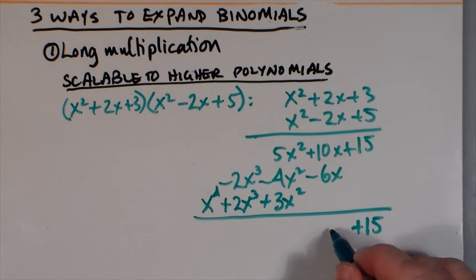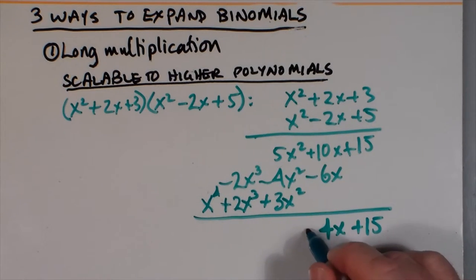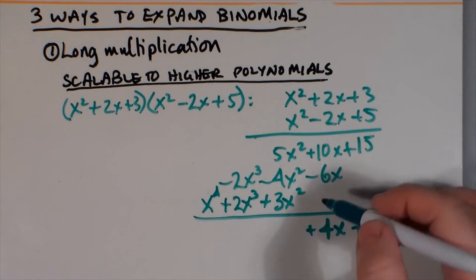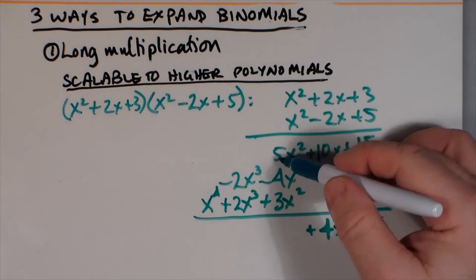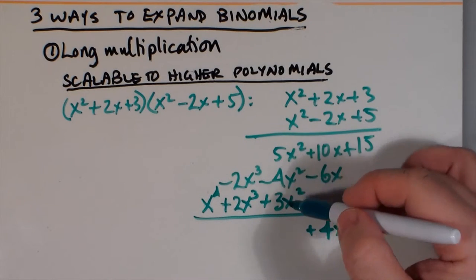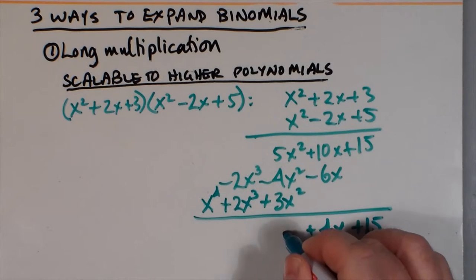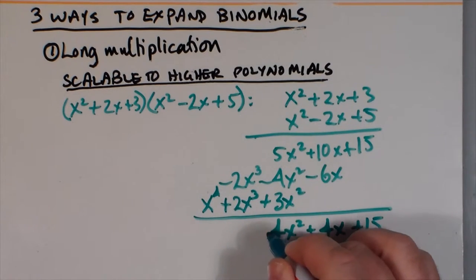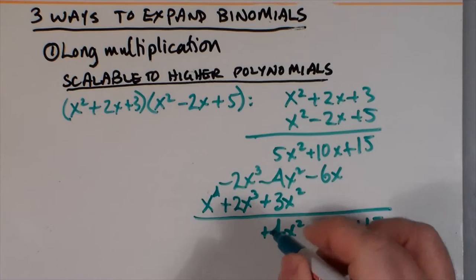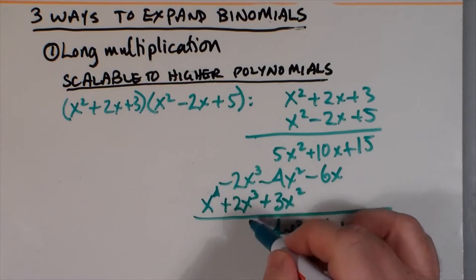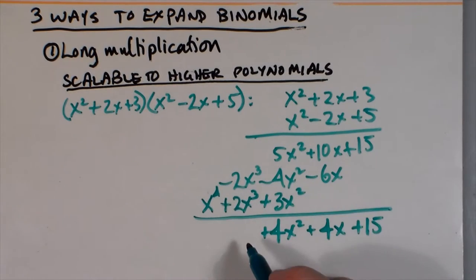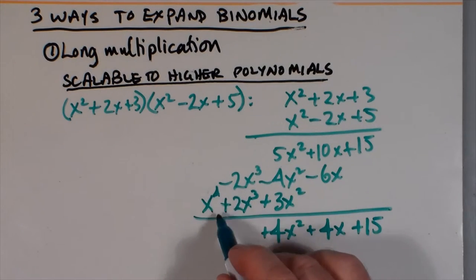Notice the x to the fourth is just that, and the 2x-cubed terms subtract out completely. So the answer to this question has no x-cubed term, but results in x to the fourth plus 4x-squared plus 4x plus 15.